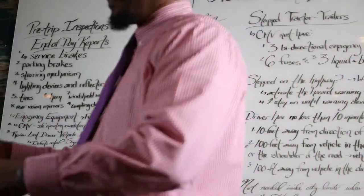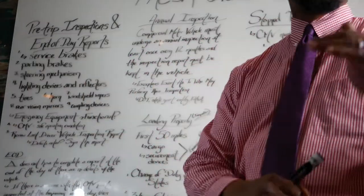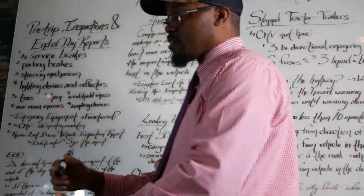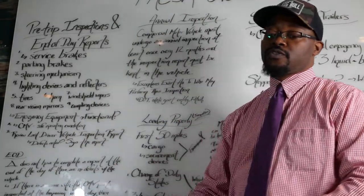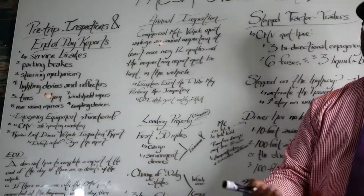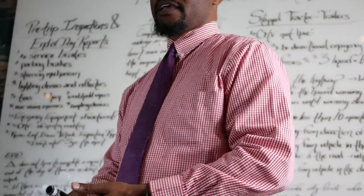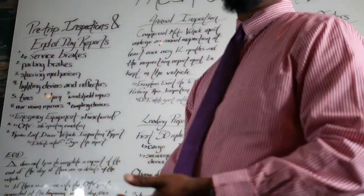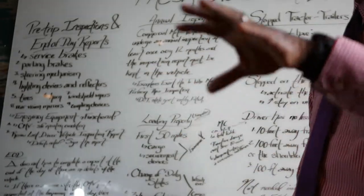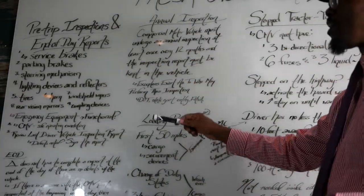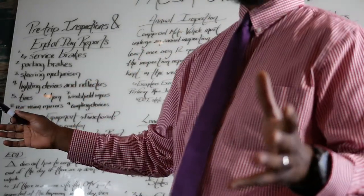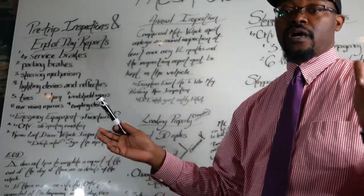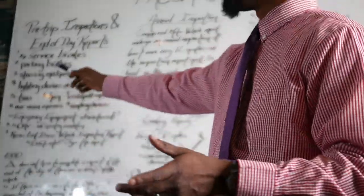I don't have the sheet here with me, but it's basically a sheet they have to go down. It tells them: do you need hazmat placards, is the gas tank full, did you check the brake lights and everything else. For the purposes of this presentation, we're just gonna go down the nine main things they look for when they're doing a pre-trip inspection.